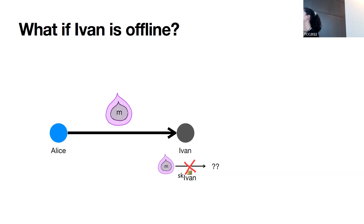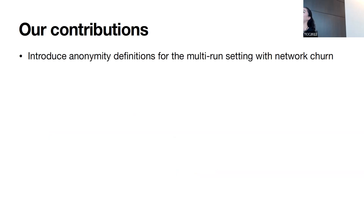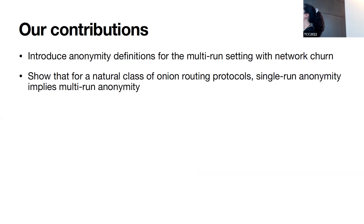Revisiting the standard onion routing example: if Ivan is offline, his secret key is necessary to decrypt the onion and reveal the next layer. So if Ivan is offline, Bob will never recover Alice's message. We needed a new notion of anonymity in the multi-run setting with network churn — this definition didn't exist before. Once we had this definition, we showed that for a natural class of onion routing protocols, single-run anonymity implies multi-run anonymity, so one only needs to prove anonymity in the single-run setting.